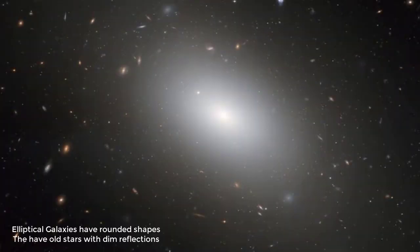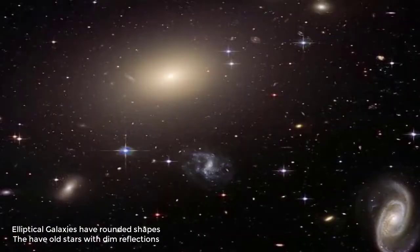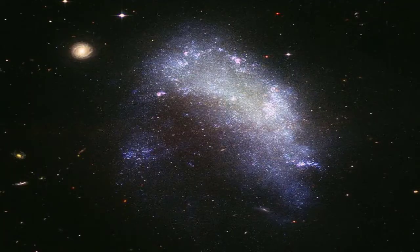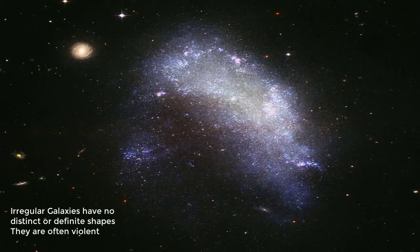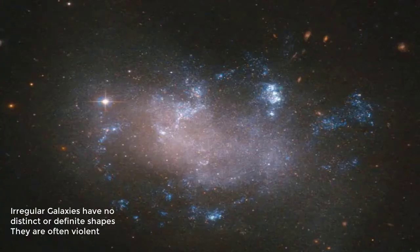Elliptical Galaxies, unlike Spiral Galaxies, have rounded shapes containing very old stars which are unable to shine brightly. The class of galaxies that do not fall in either of those two categories are the Irregular Galaxies. They have no distinct shapes and are often violent, having close encounters with other galaxies.